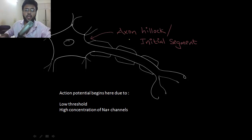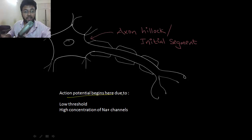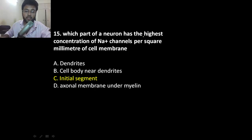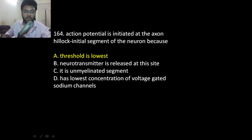Moving on, we have the axon hillock and initial segment, also called IS. This is the area where the action potential begins. It begins here because the threshold is low and there is a high concentration of sodium channels in the axon hillock. Direct MCQ: which part has the highest concentration of sodium channels — the initial segment or axon hillock? Action potential is initiated there because of low threshold.